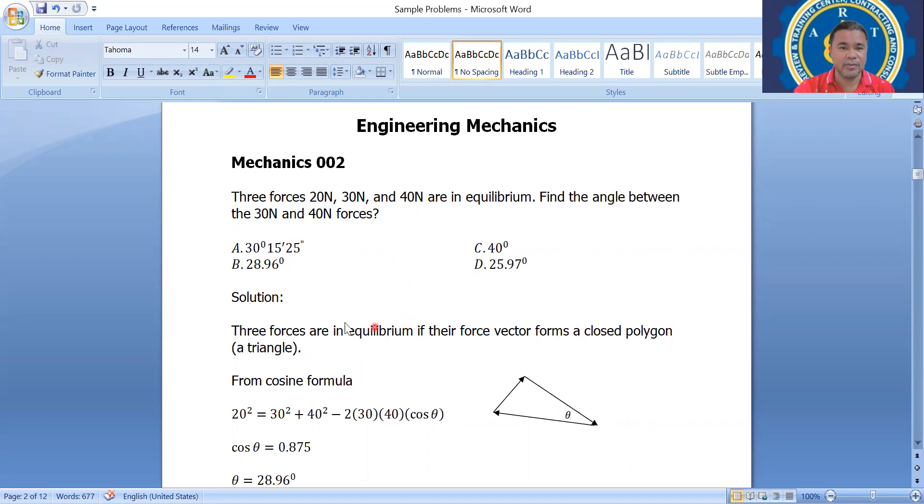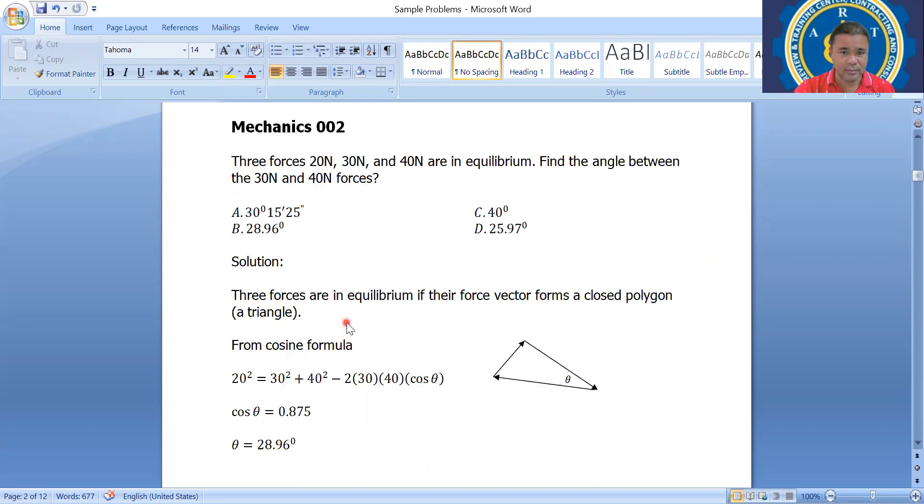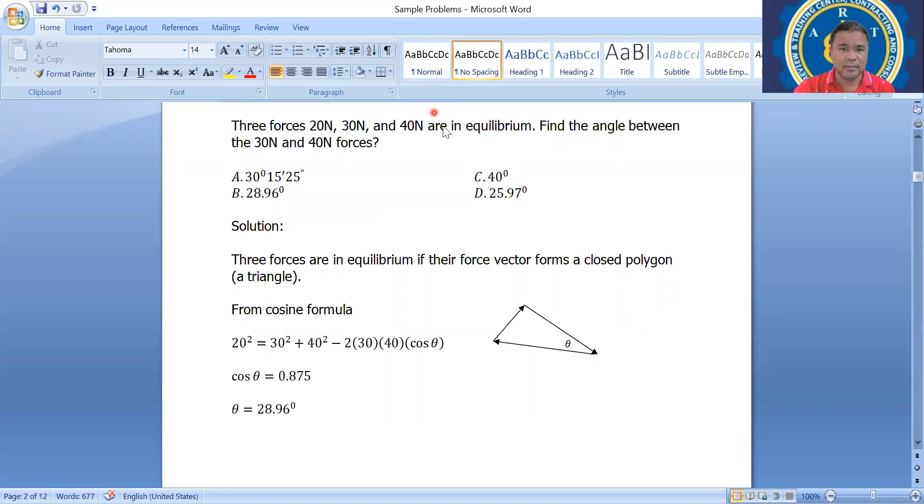So the solution. The three forces are in equilibrium if their force vectors form a closed polygon triangle. So this is the closed polygon triangle. You have the 20 Newton here, we have the 30 Newton, and we have the 40.